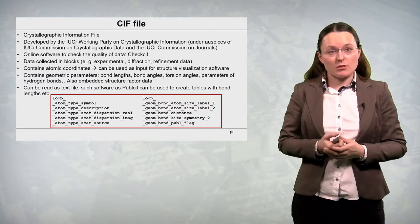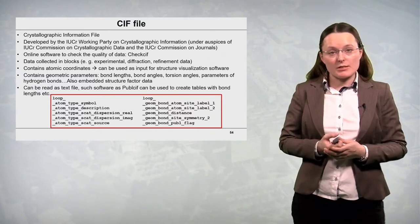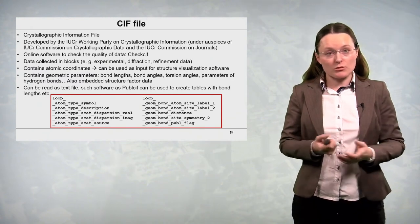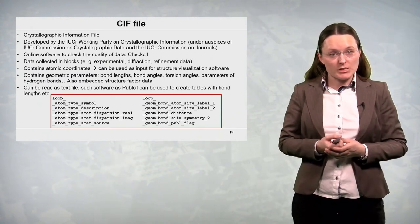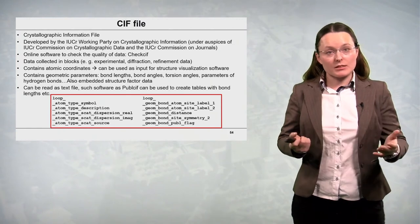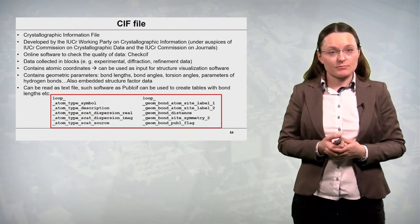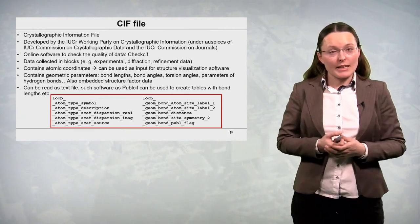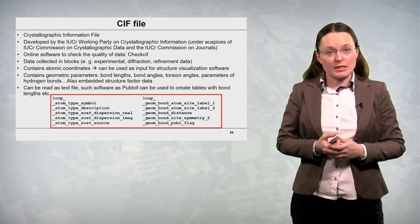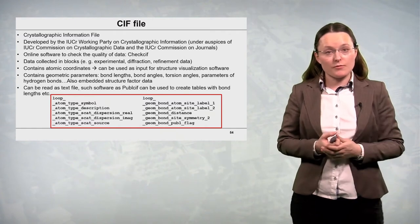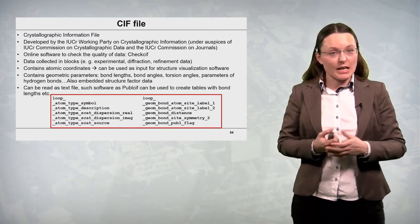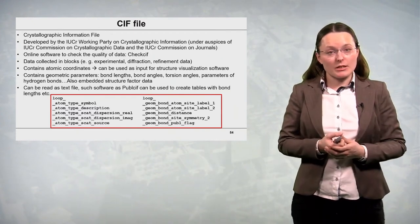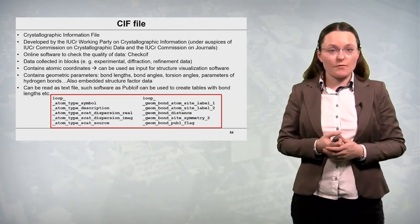CIF files contain also geometric parameters, bond lengths, bond angles, torsion angles, parameters of hydrogen bonds and recently also embedded structure factor data. CIF file can be read as text file and also different types of software can be used. For instance, publCIF can be used to create tables with bond lengths and other parameters. At the bottom of the slide you can see some examples of CIF file syntax.